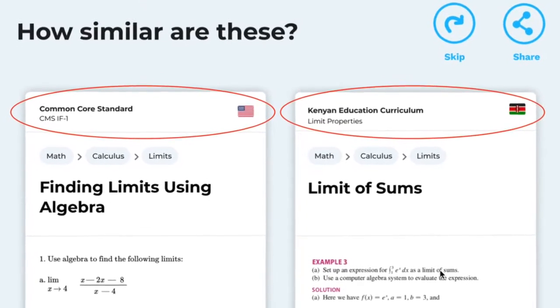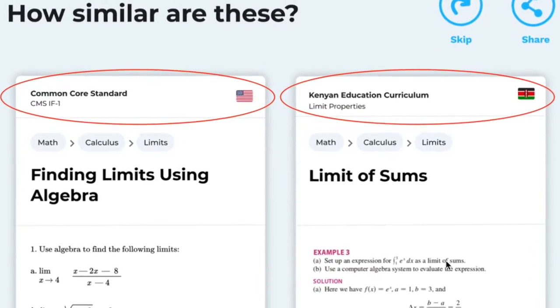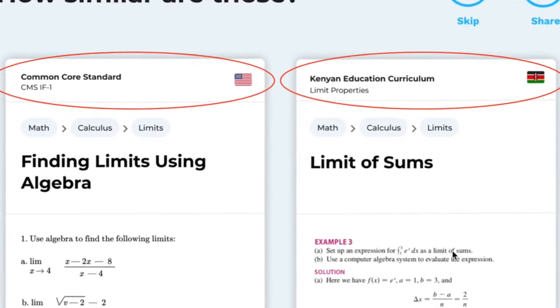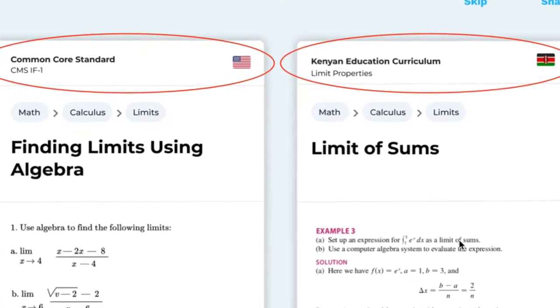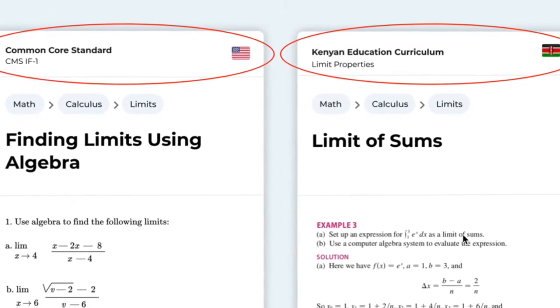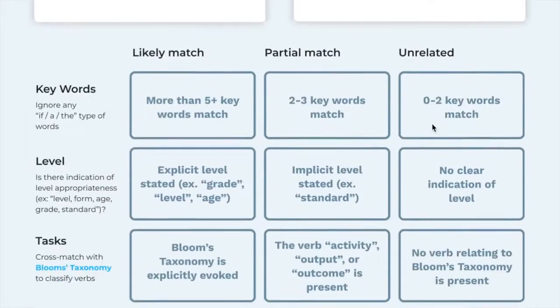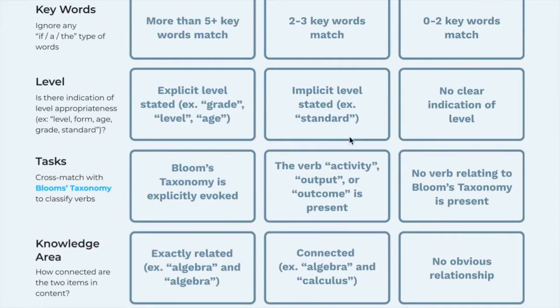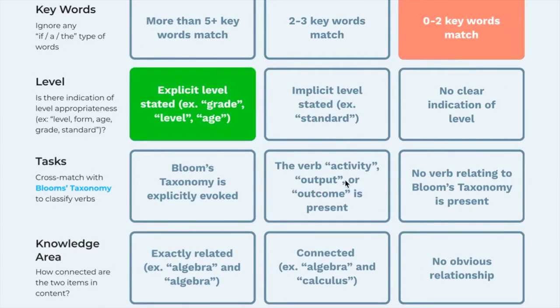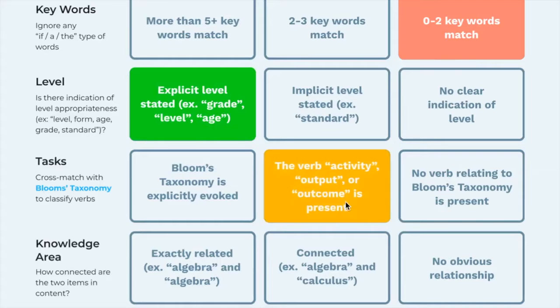The goal is to start the process by taking two excerpts from a digitized curriculum document, judge how similar they are, and then use those judgments to improve a machine learning model's ability to make future matches.